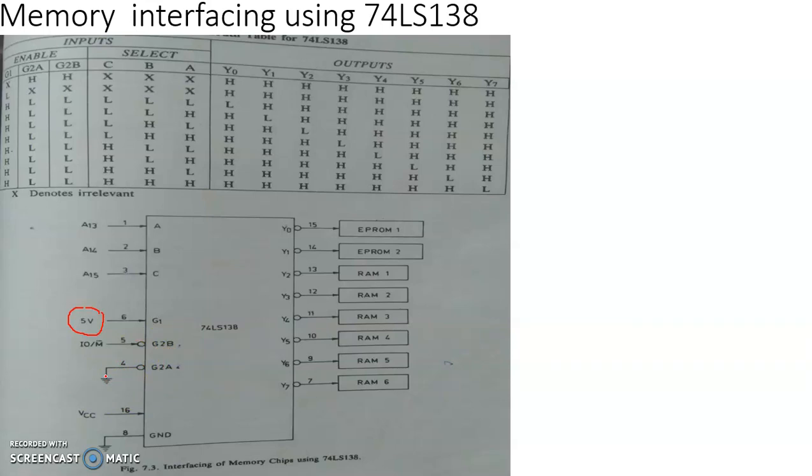The fact is that for enabling this chip, there are three different control signals or controlled input lines: G1, G2A, and G2B. To enable this chip, G1 must be high, 5 volt, Boolean 1 must be available there. G2A and G2B must be low.